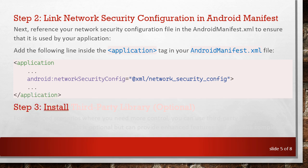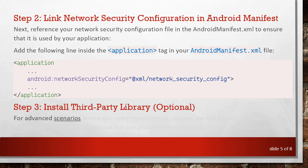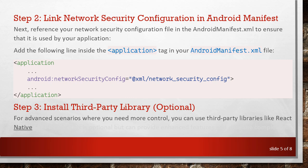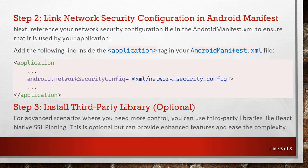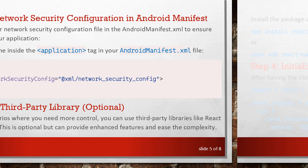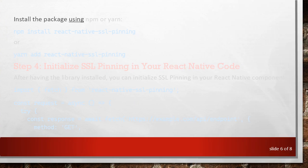Step 3: Install Third-Party Library (optional). For advanced scenarios where you need more control, you can use third-party libraries like React Native SSL Pinning. This is optional but can provide enhanced features and ease the complexity. Install the package using NPM or Yarn.